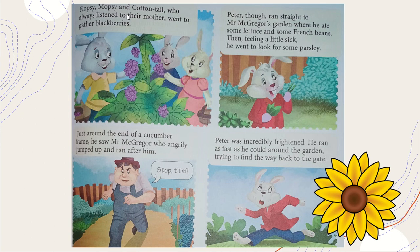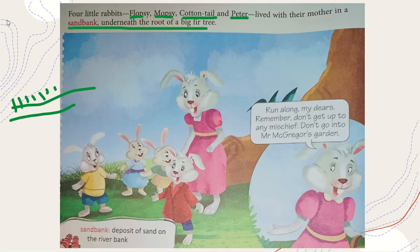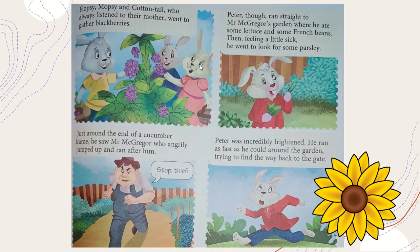Flopsy, Mopsy, and Cottontail always listened to their mother and went to gather blackberries. But Peter, since mama told him not to go, ran straight to Mr. MacGranger's garden where he ate some lettuce and some French beans.